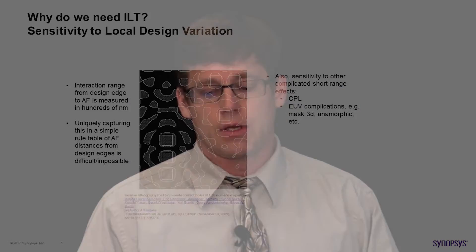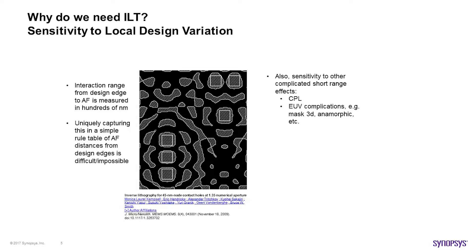The second main reason for using ILT is pattern dependence. As things are shrinking, we have a lot of complicated interactions happening over the range of hundreds of nanometers, which can encompass multiple bands of assist features. Here we have a small one-by-three array of contacts and some other random placement of contacts. The placement of assist features around a somewhat isolated feature is similar at first, but after a little distance the second contact starts to augment what is happening with the assist features, and there's a lot of interaction in terms of second and third bands of assist features — which is really difficult to capture in a typical rule table.